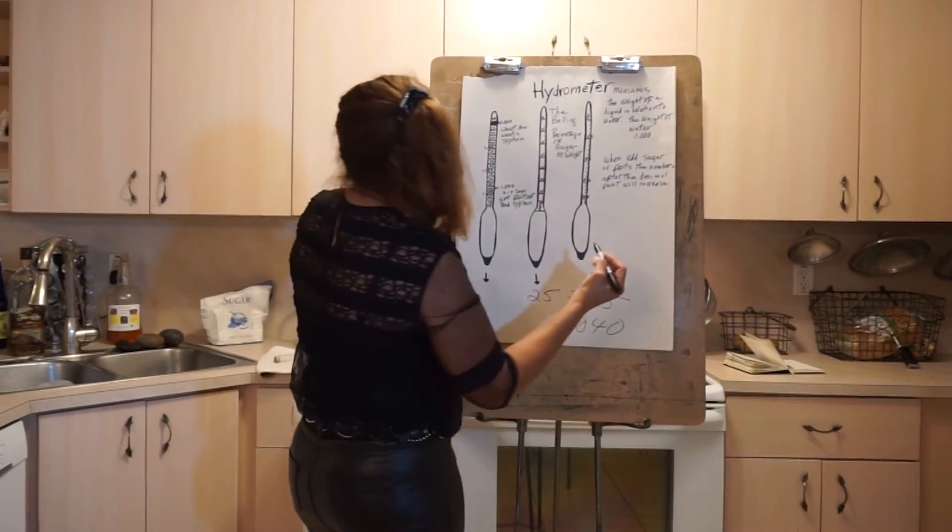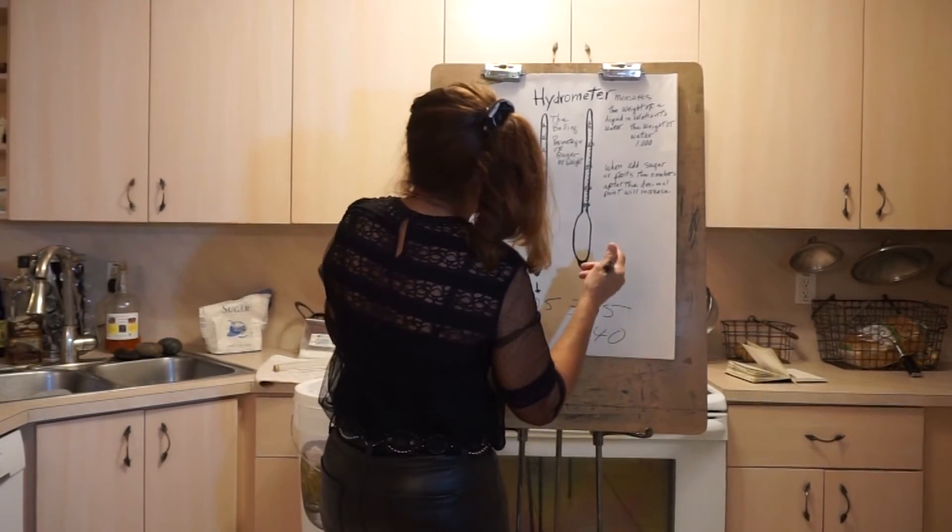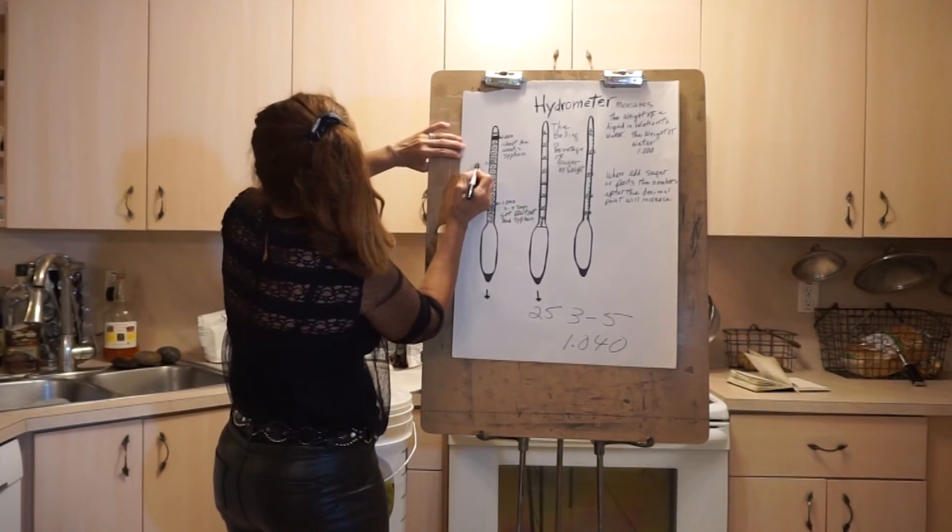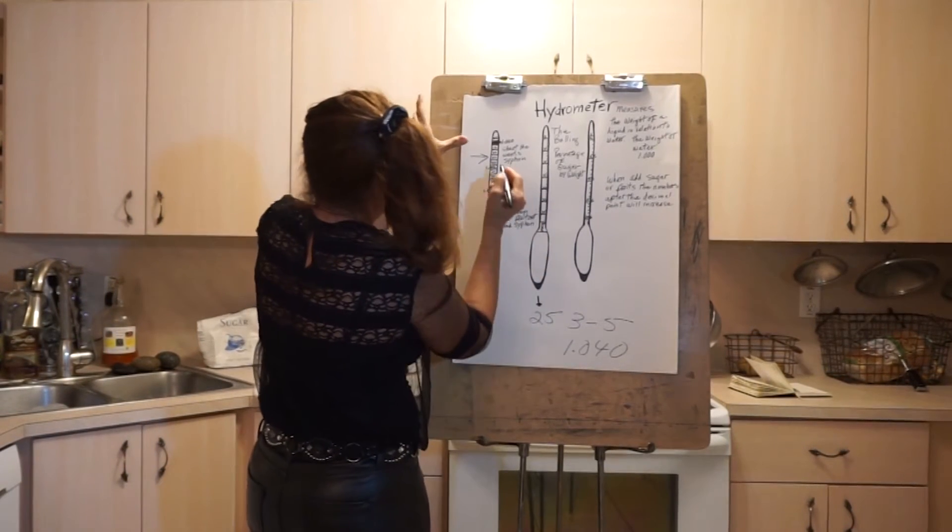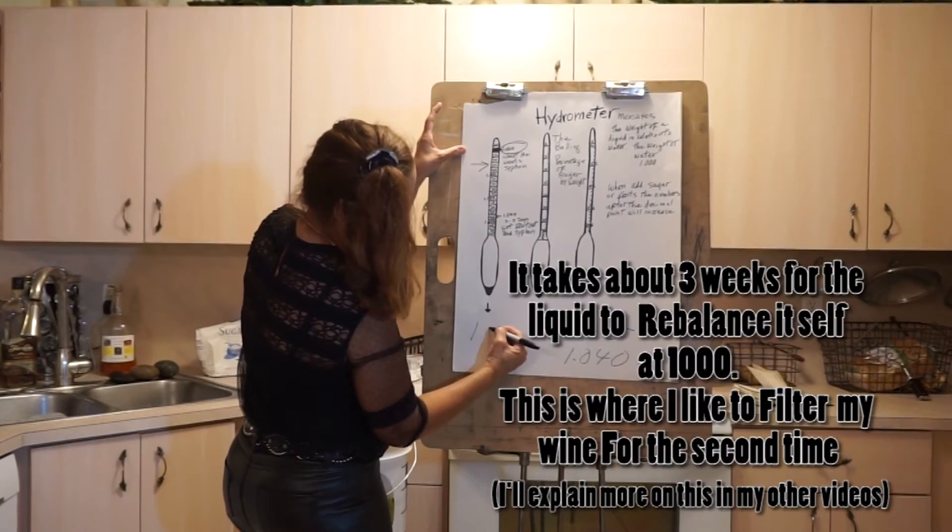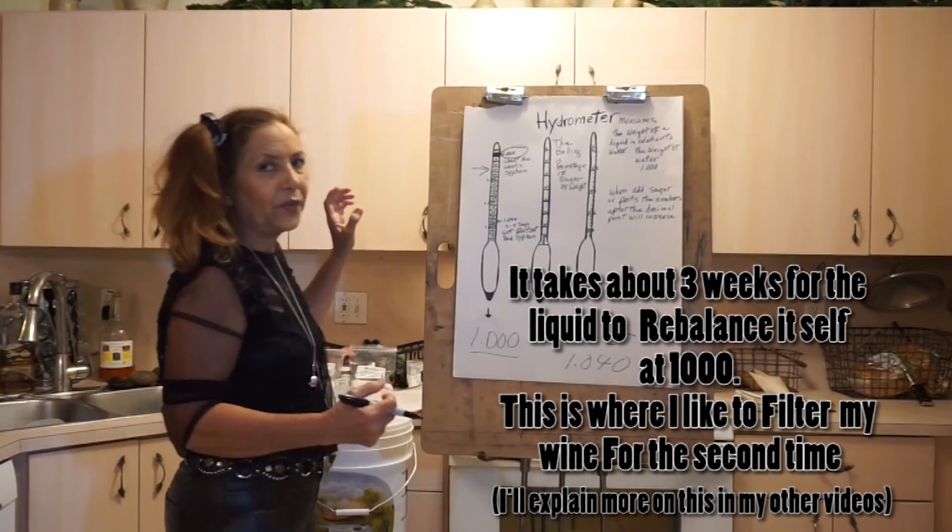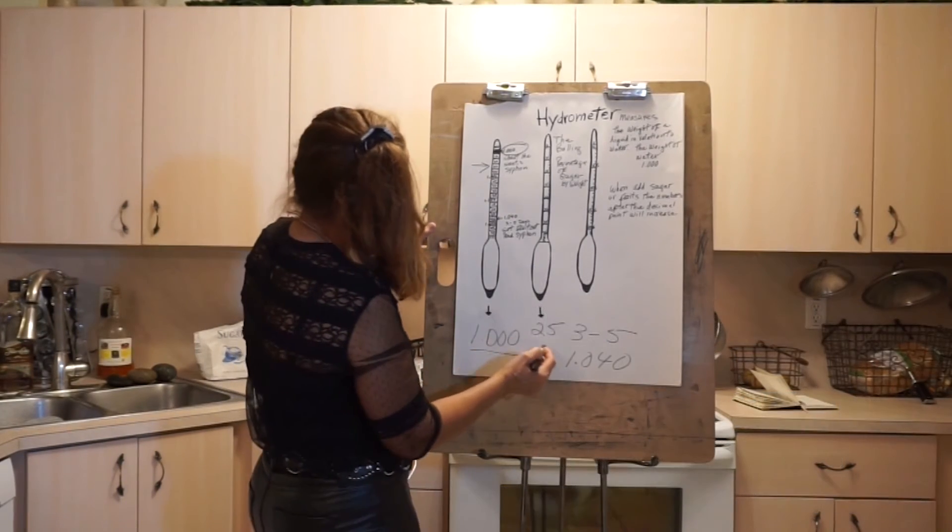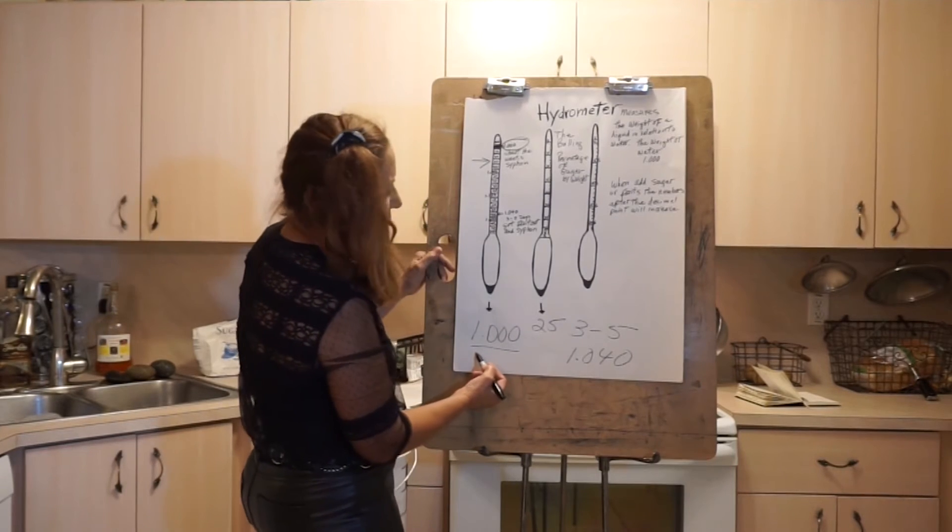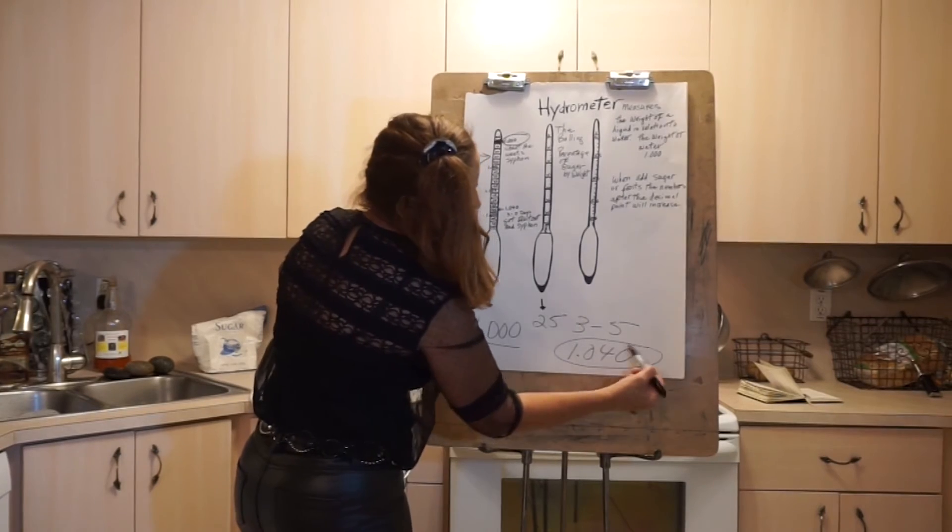Next, in about three weeks, you're going to get a little bit of liquid, measure again with the hydrometer, and you're going to be looking again on this side of the hydrometer. When you get to 1.000, that's telling you that you have to siphon the wine again.